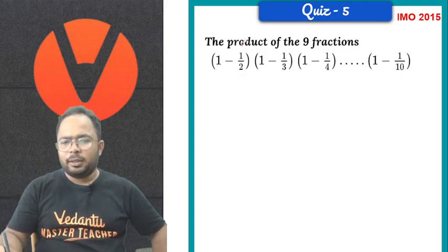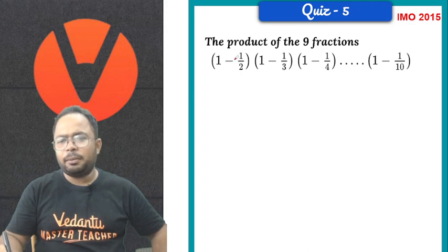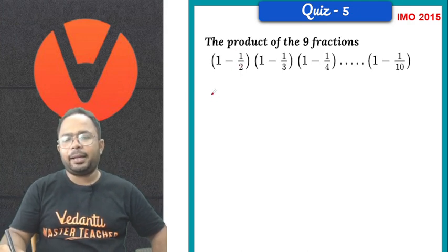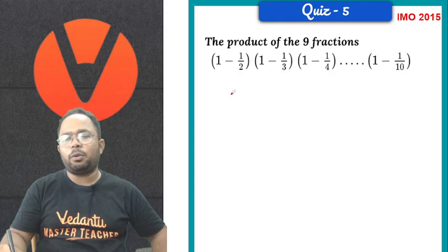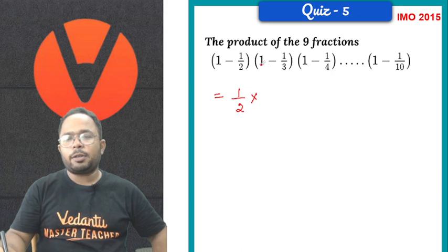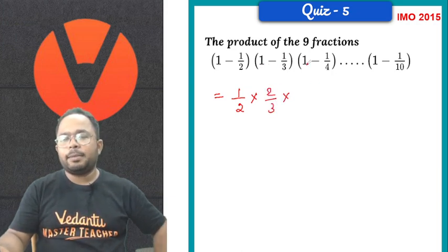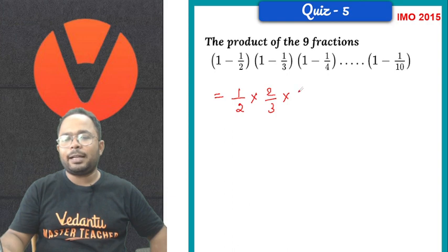So, let's we do the subtraction of the numbers being inside your bracket. 1 minus 1 by 2 would we get is 1 by 2 into. If you subtract 1 minus 1 by 3, you will get 2 by 3. Similarly, 1 minus 1 by 4, you will get 3 by 4. And similarly, it will come around 9 by 10.